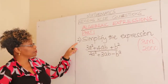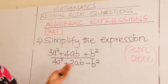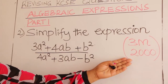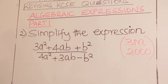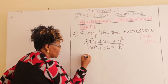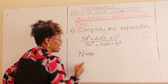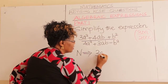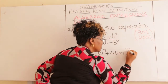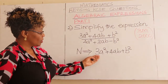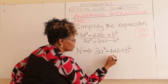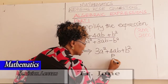Number two, learner: simplify the expression. It was carrying 3 marks in year 2000. So, how do we go about it? Come and write your numerator — you can label it N. Rewrite it: 3a squared plus 4ab plus b squared. This is a quadratic expression, so factorize it out using the product-sum method.